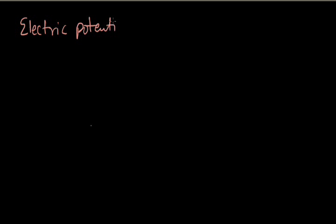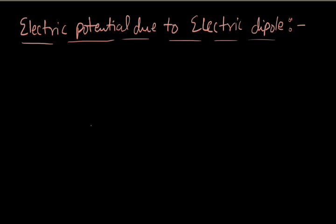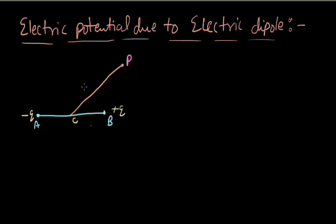Electric potential due to electric dipole. Let's say we have a dipole AB with charge minus Q and plus Q. C is the center of the dipole. We have a point P at r distance from the center of the dipole, and P is the dipole moment. The distance between the dipole charges is D, so the distance AC or CB will be equal to D by 2. The angle between the R vector and the dipole moment is theta.